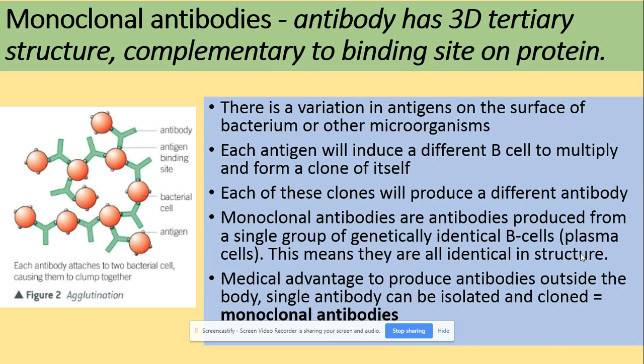Monoclonal antibodies will all be the same. There is huge variation in antigens — for example, with flu, there are many types, each with different antigens. On the surface of a bacterium or different microorganisms, we have many different types of antigen. Each antigen induces a different B cell to multiply and form a clone of itself, and each B cell produces a different antibody. A monoclonal antibody is one produced from identical B cells, so it must be identical — hence we call them monoclonal antibodies.